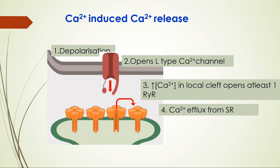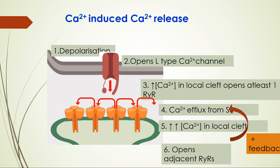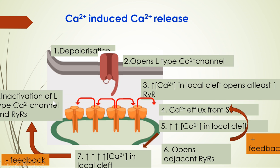As one ryanodine receptor channel opens up, calcium efflux from the sarcoplasmic reticulum occurs. That released calcium acts on other ryanodine receptors, causing further opening — this is a positive feedback mechanism where one ryanodine receptor is responsible for opening others, increasing calcium concentration in the local cleft. However, as calcium concentration increases, a negative feedback mechanism is also triggered, responsible for closure of the L-type calcium channel and inactivation of ryanodine receptors. That's how the system is self-controlling.